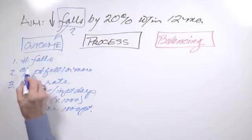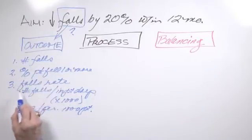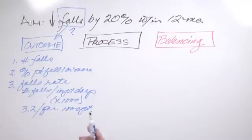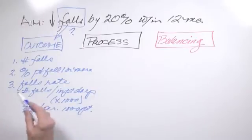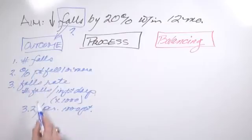So now we have a simple count, number of falls, percent of falls, and a falls rate. Typically, you have one major outcome measure, or you have a couple. In this case, falls, it's all the same category, so we should pick one or other of these.